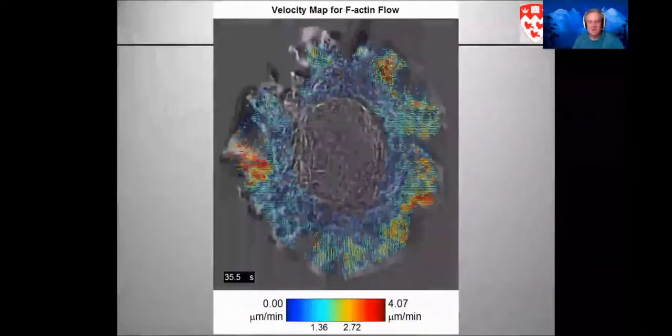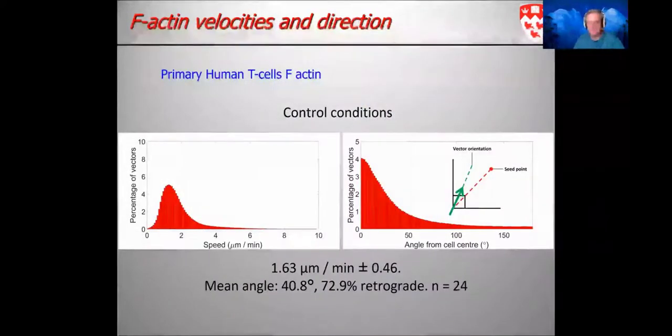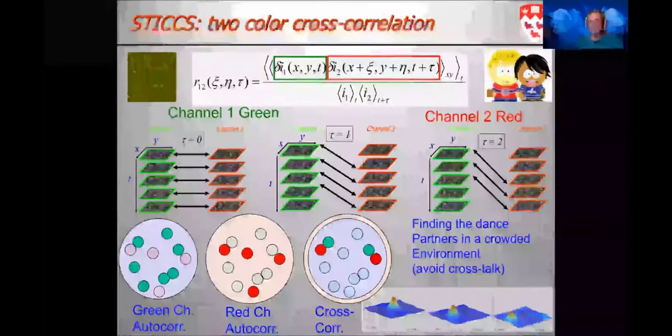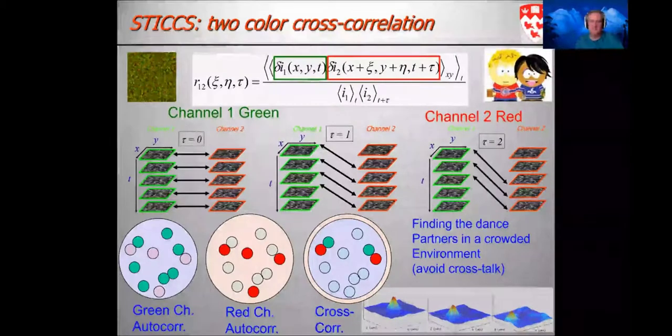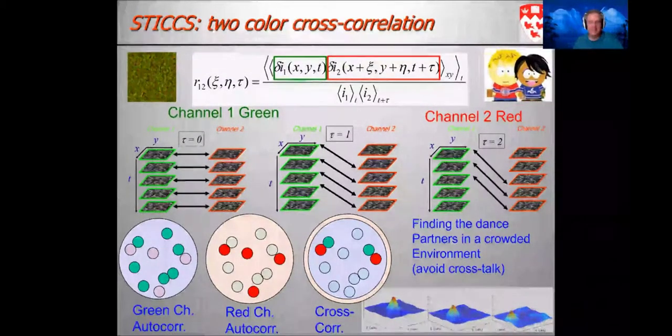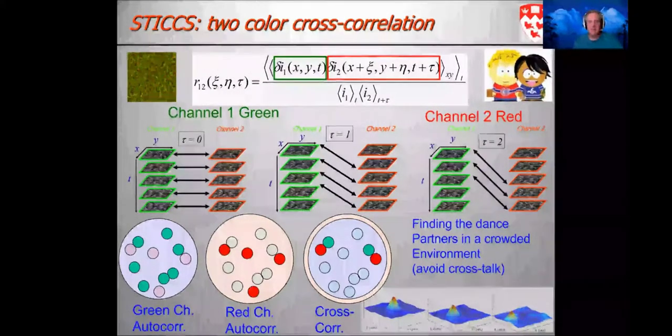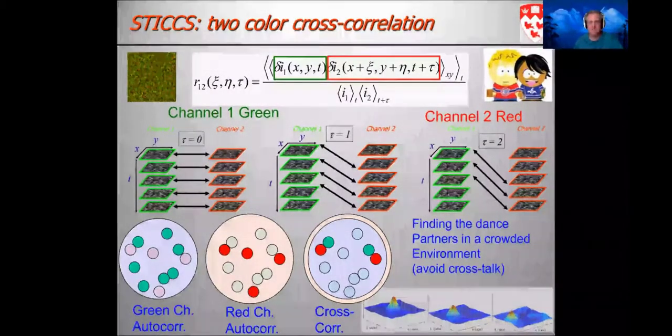In this system you can actually visually see the retrograde actin dynamics in the TURF system. However, the STICS analysis allows us to quantify aspects of velocity distribution. Here George has basically characterized the angle of the retrograde actin flow relative to a line drawn to the cell center. We see a peak at zero. In other words, most of the actin is largely moving retrograde in most of the regions that were analyzed. So one can quantify this.